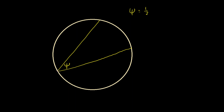So this is psi — it is an inscribed angle. Its vertex sits on the circumference, and if you draw the two rays that come out from this angle, or the two chords that define this angle, it intersects the circle at the other end. If you look at the part of the circumference inside of it, that is the arc subtended by psi, where psi is that inscribed angle, the vertex sitting on the circumference.